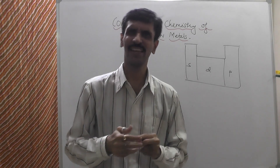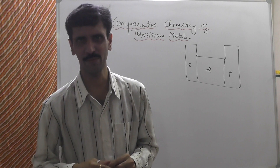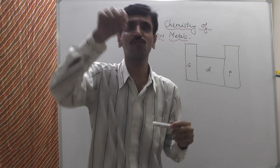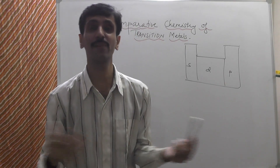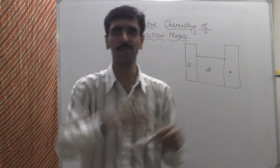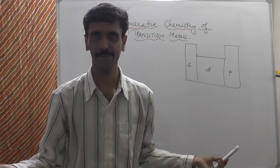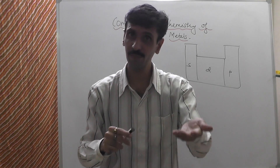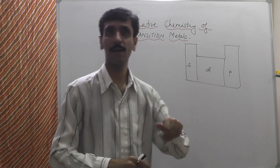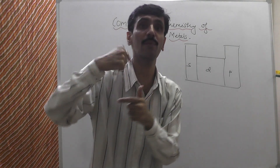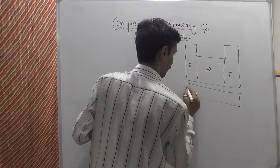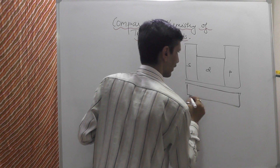In a classroom, there are some students with different characters — especially those sitting at the back. To ensure the lecture goes smoothly, we change their position, bringing them to the front bench. The same applies to f-block elements: f-block elements are a part of d-block elements, but because their properties are different, we give them a different position — at the bottom of the periodic table, completely aloof, not interacting with anyone.